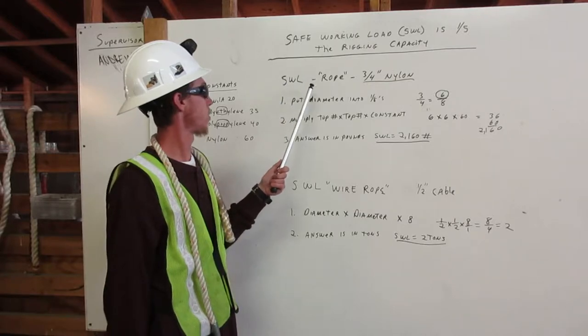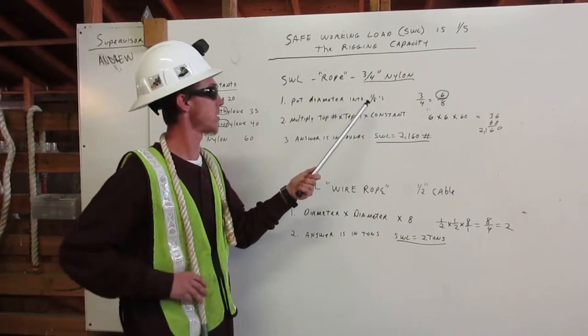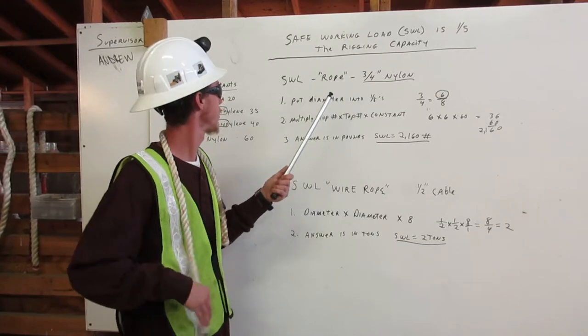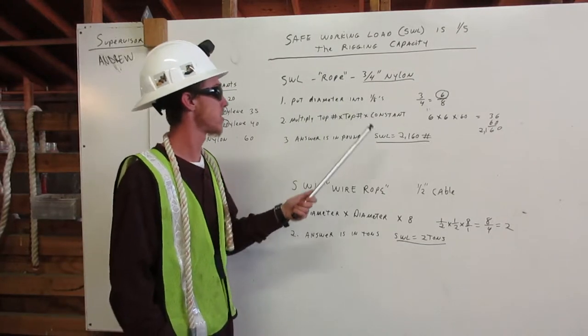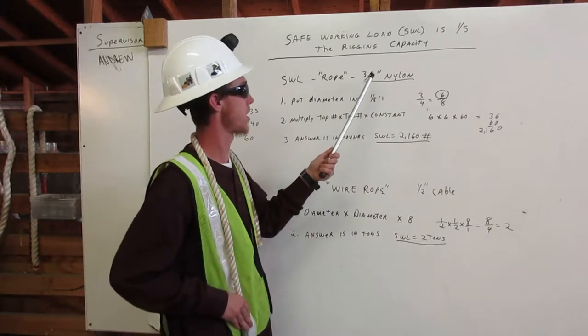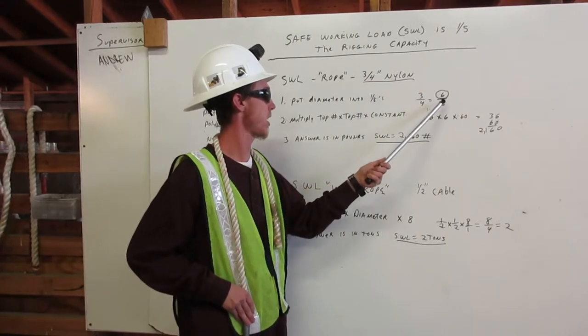SWL for rope is three-fourths inch nylon. Number one, put diameter into eighths. So it is three-fourths inch nylon. We are going to turn it into six-eighths.